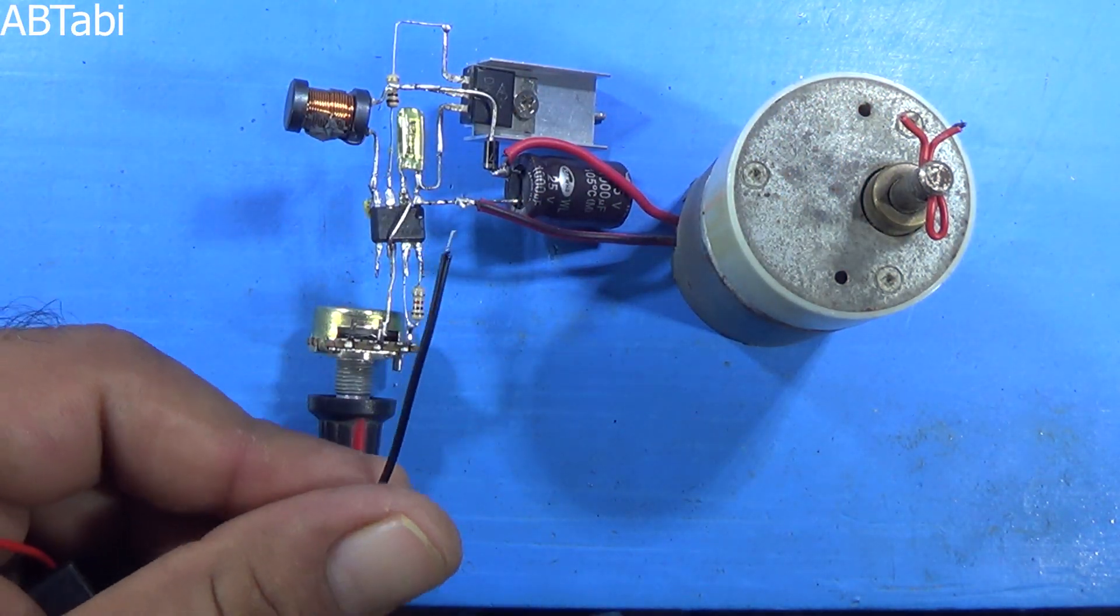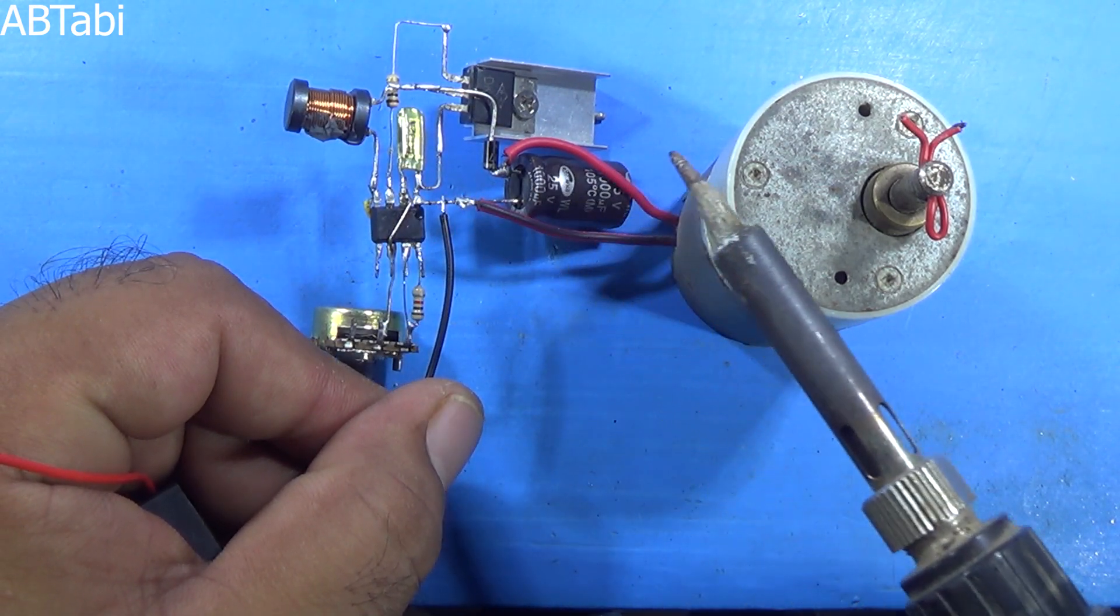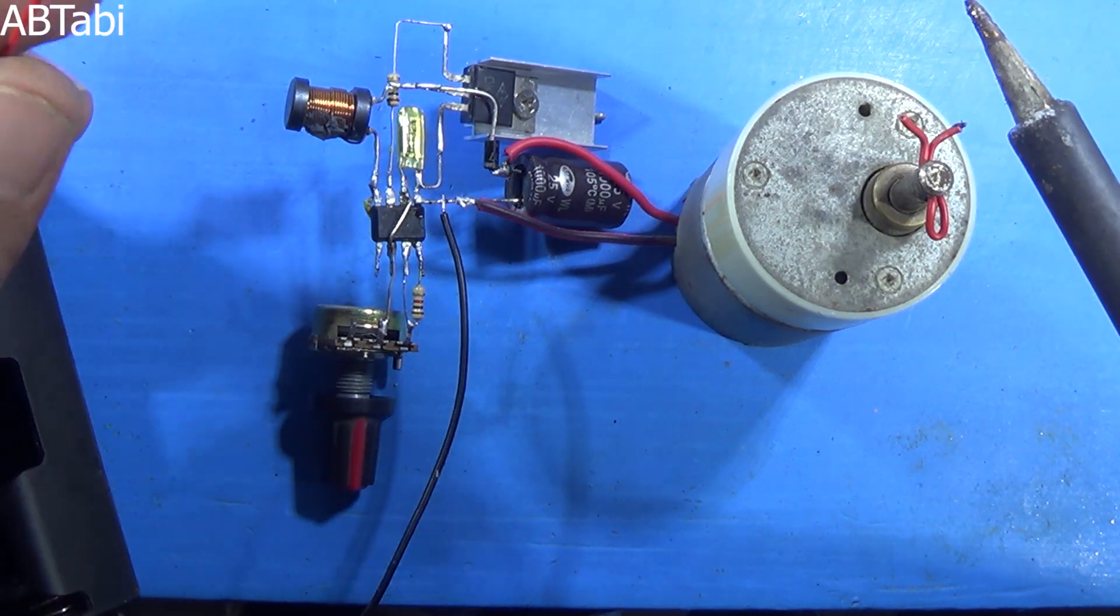3.7V DC battery negative terminal connects with IC pin 1 and positive connects with IC pin 4 or 8.